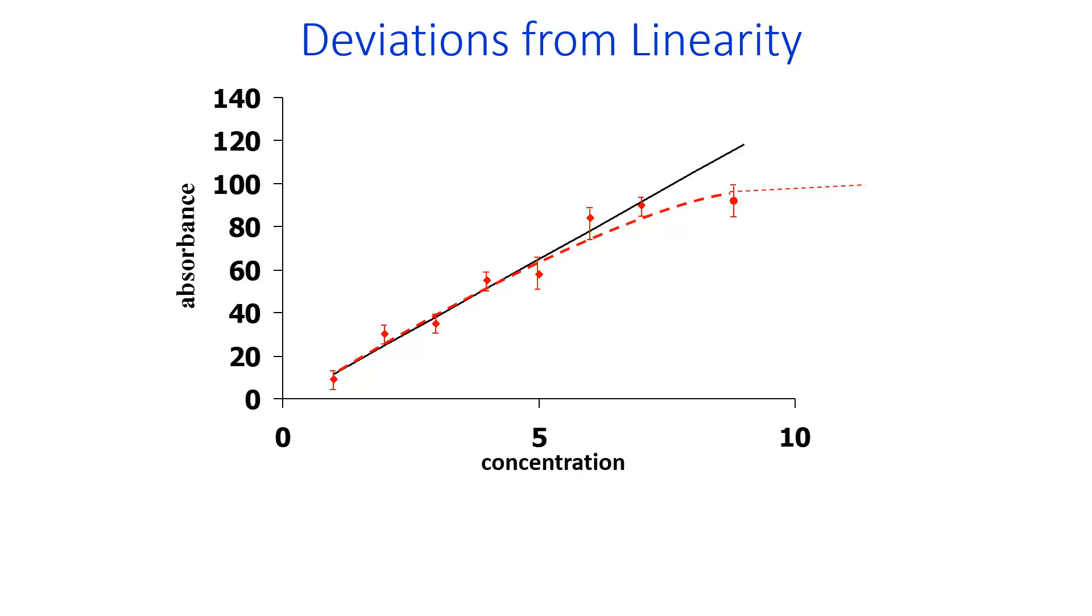The reason that you want to have concentration standards that are higher in concentration and lower in concentration than your unknown, is that sometimes the instrument response is not linear with respect to concentration at all concentrations. So this is a case where that's true. Above about a concentration of five units, whatever, this line deviates from linearity. At low concentrations, the model y equals mx plus b is a good one, but at high concentrations it's not, and so you need to know that in order to use your model.